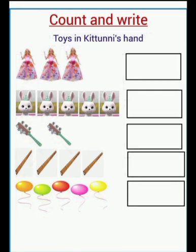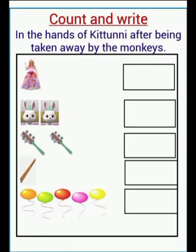That means the monkeys took 2 dolls out of 3, and 3 rabbit dolls out of 5. Nothing was taken from kilook, but 3 barrels were taken out of 4, and nothing was taken from the balloons.